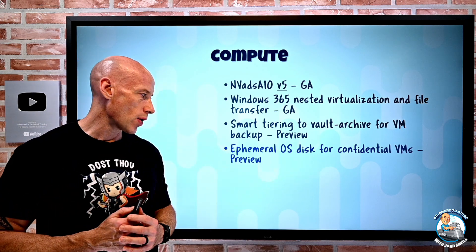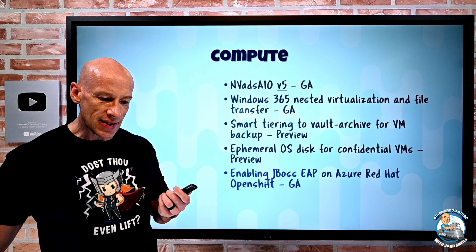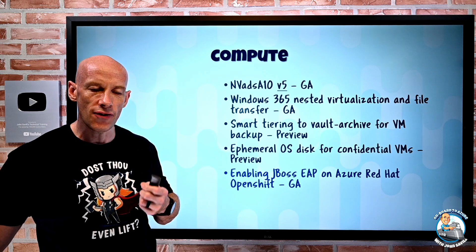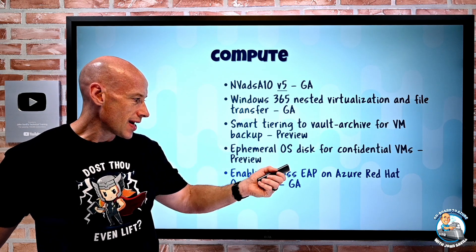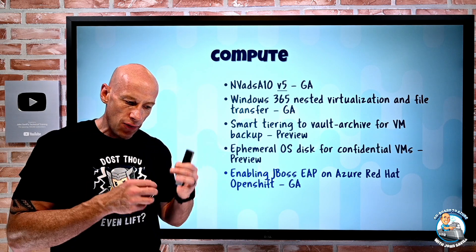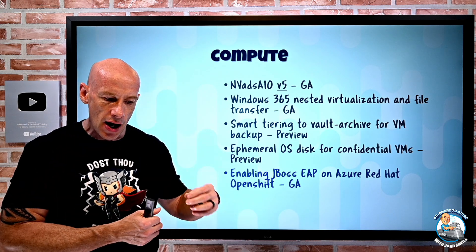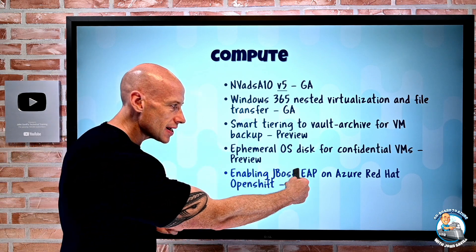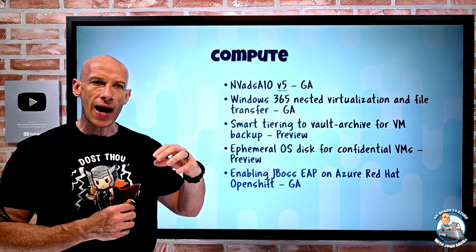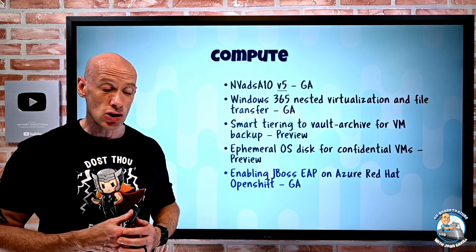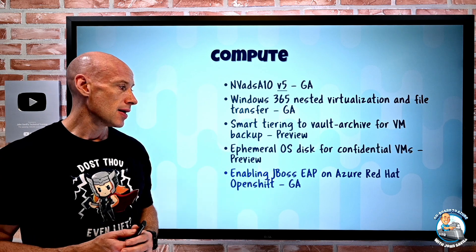You can now enable JBoss EAP — the enterprise application platform for Java enterprise edition applications — running on the Azure Red Hat OpenShift offering. Azure Red Hat OpenShift provides a fully managed OpenShift cluster, which is really Kubernetes underneath with a lot of added-value features. JBoss EAP on Azure Red Hat OpenShift is really a set of guidance on configuring both solutions together. JBoss EAP is already available on Azure App Service, VMs, and VM scale sets, but this is now an additional deployment option.